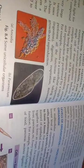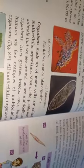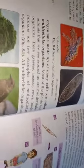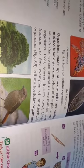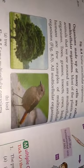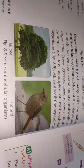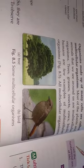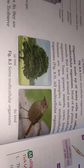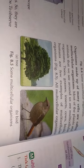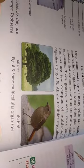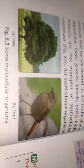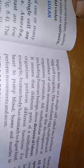All functions like ingestion, digestion, respiration, movement, growth, and reproduction are performed by one cell. Organisms made up of many cells are called multicellular organisms. Most of the plants and animals that we see — trees, grasses, insects, cows, birds, and humans — are multicellular organisms. All multicellular organisms begin their life as a single cell.